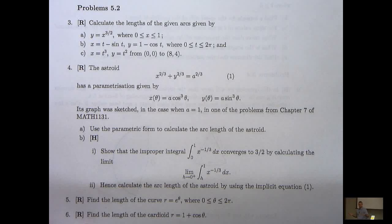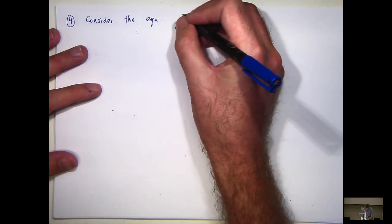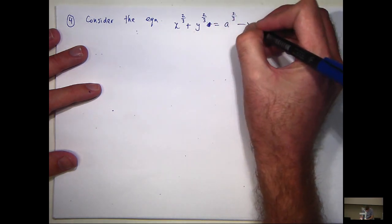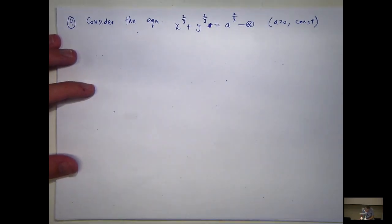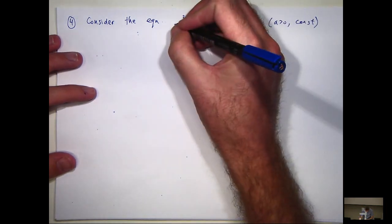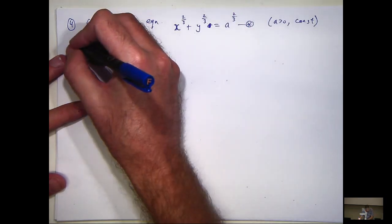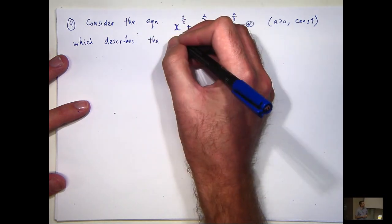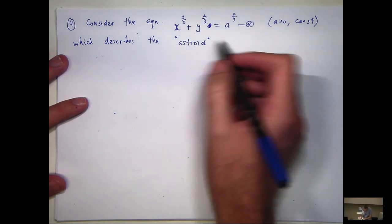Onto the asteroid. So this is a good question. So let's consider the following equation. This equation here — a is a positive constant. The curve associated with that equation describes a special curve known as an astroid, not to be confused with an asteroid. The astroid comes from the Greek star-like shape.